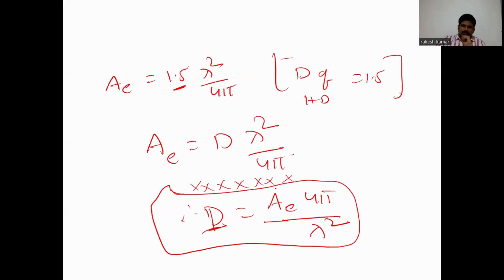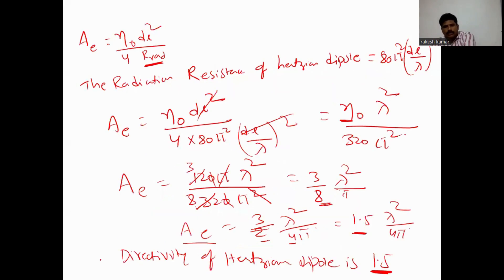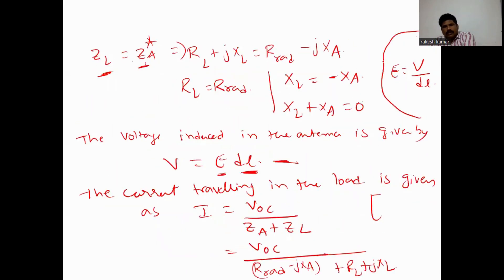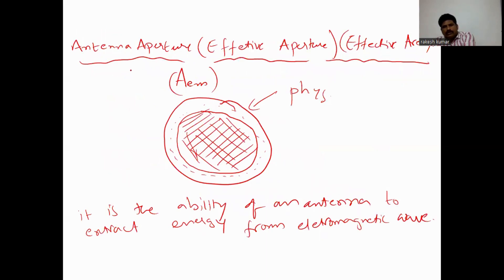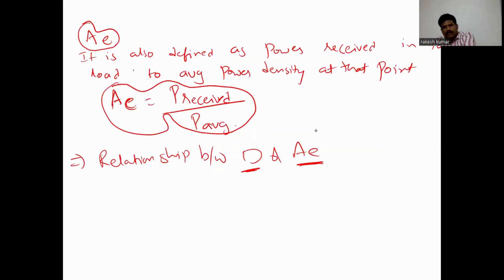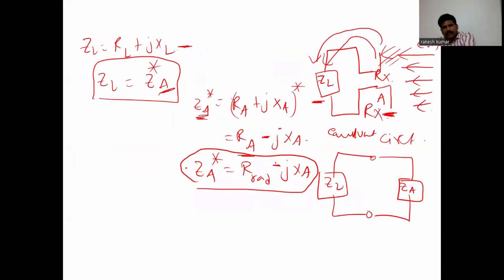We will solve many problems using this in the next class. To summarize: the effective aperture area is the ability of an antenna to extract energy from electromagnetic waves. It is also defined as the ratio of power received to average power density at that point. We derived the relationship between directivity D and effective aperture area Ae, yielding A equals D λ² / 4π.